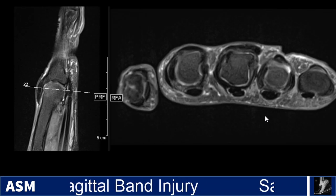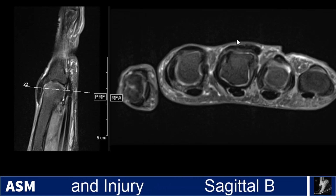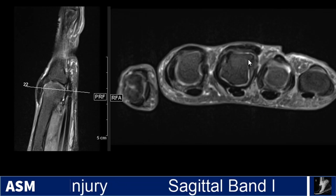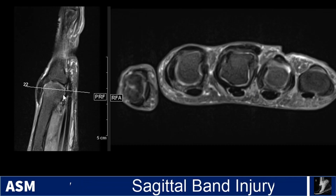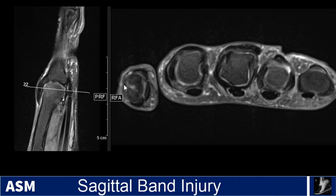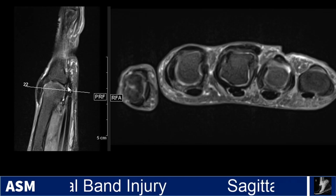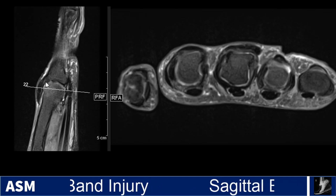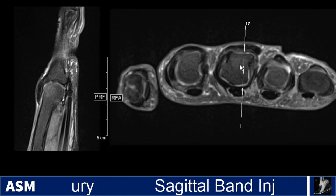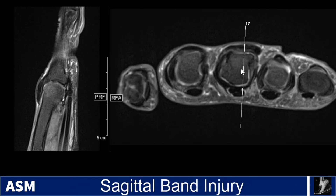We're going to begin with the axial proton density fat suppressed image here on this side and the corresponding sagittal proton density fat suppressed image on this side. You can see the cross reference here. We are at about the level of the dorsal aspect of the metacarpal head. This is the third digit, which is the affected digit for this patient.